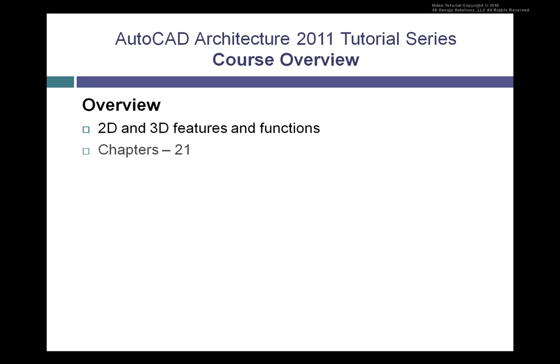We have divided this course up into 21 logical chapters that you can take in sequence, with a total of 310 lessons. You may also search to find just the particular lessons on the topics you are looking for. Our content is very granular, with lessons approximately 4 to 6 minutes in length. They may be re-sequenced and re-ordered so that you may watch them at any time and in any sequence you wish. We have included individual lessons so that you may understand the topic as a standalone lesson.